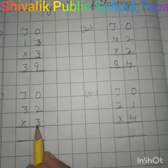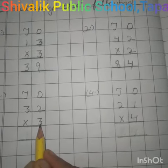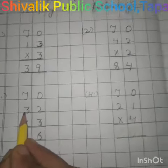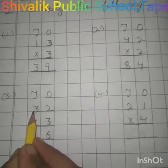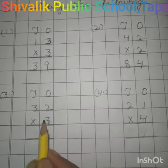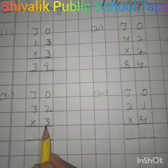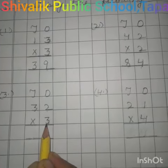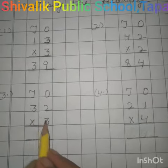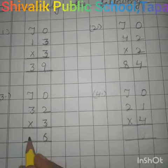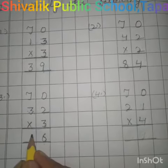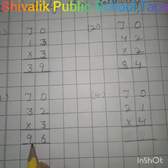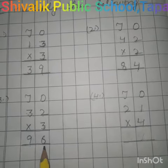Now we will read the table of 3 up to 10s place, which is at 3. 3 ones are 3, 3 twos are 6, 3 threes are 9. So we write here 9. Now the answer is 96.